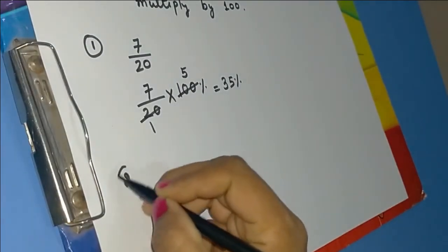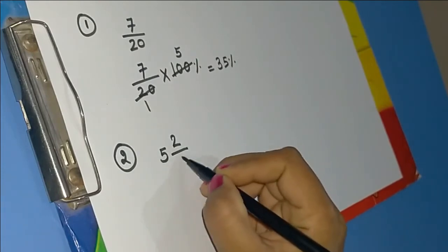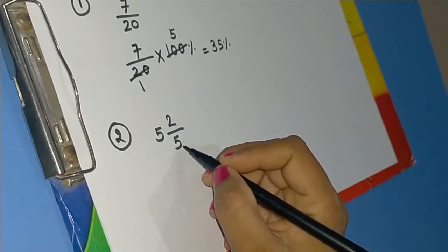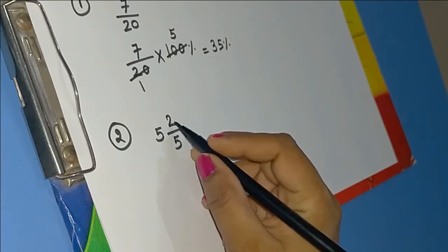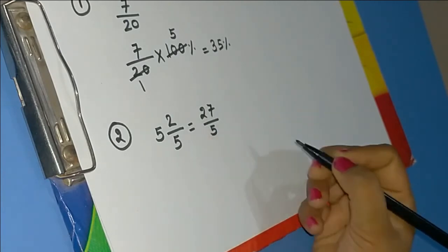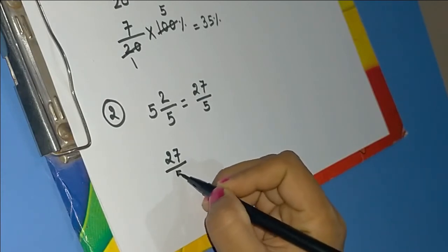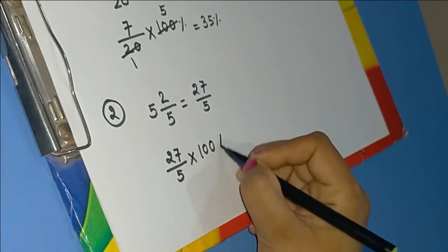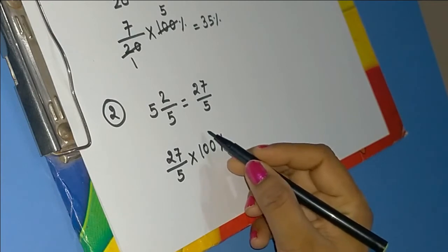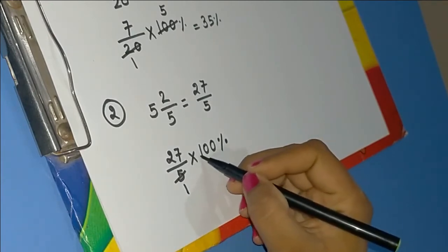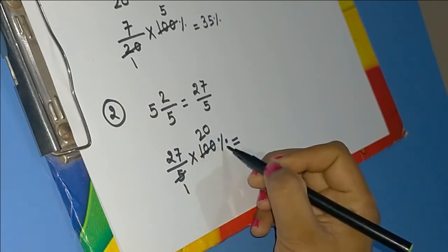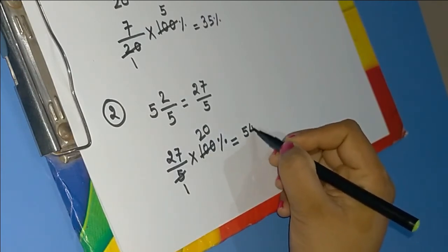Another example is the mixed fraction 5 2/5. First, convert it to an improper fraction: 5 × 5 = 25, and 25 + 2 = 27, giving us 27/5. Now multiply 27/5 by 100 percent. Since 5 × 20 = 100, we multiply 27 by 20, giving us 540 percent.